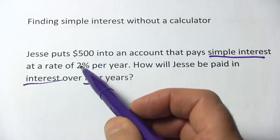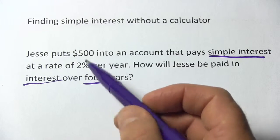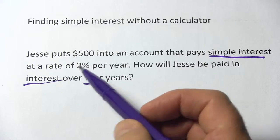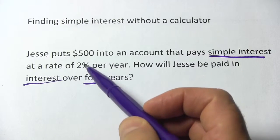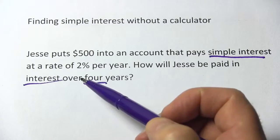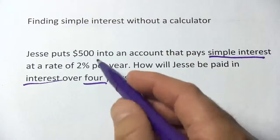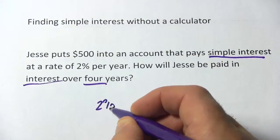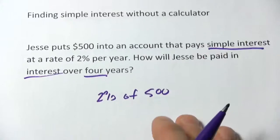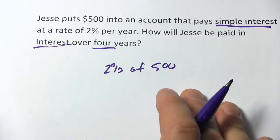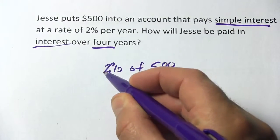Let's start by finding out how much Jesse would get paid in interest for one year. With an interest rate of 2%, it's going to be 2% of 500. We're supposed to be doing this without a calculator. 2% of 500 is the same as 2% times 500. We move the decimal two spaces to the left to convert it to a decimal — .02 times 500.